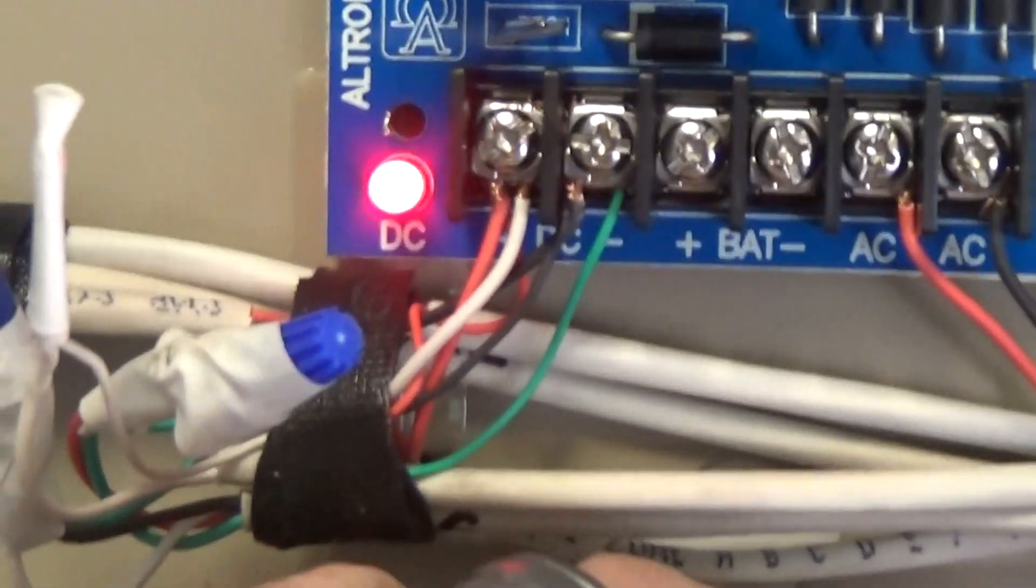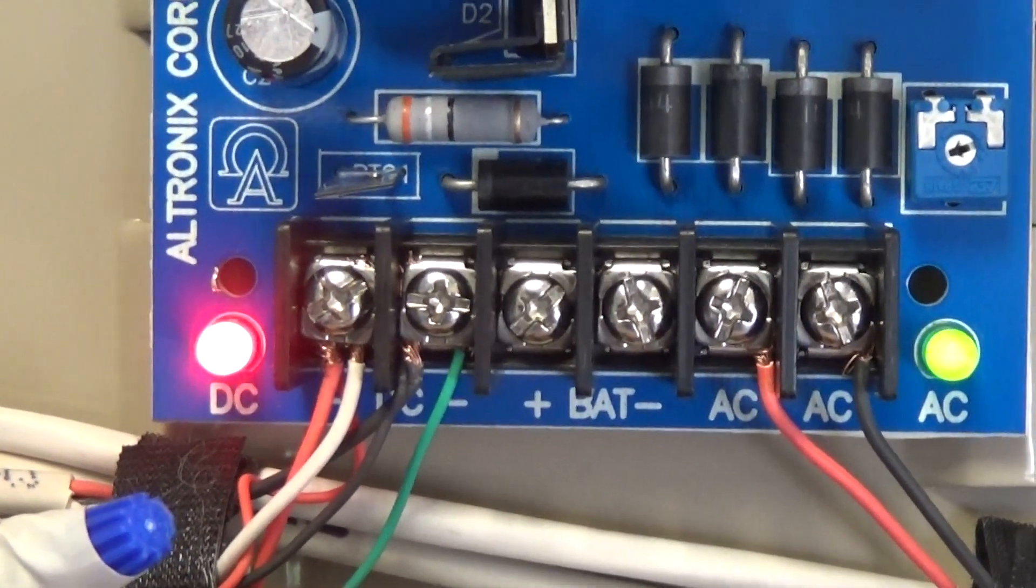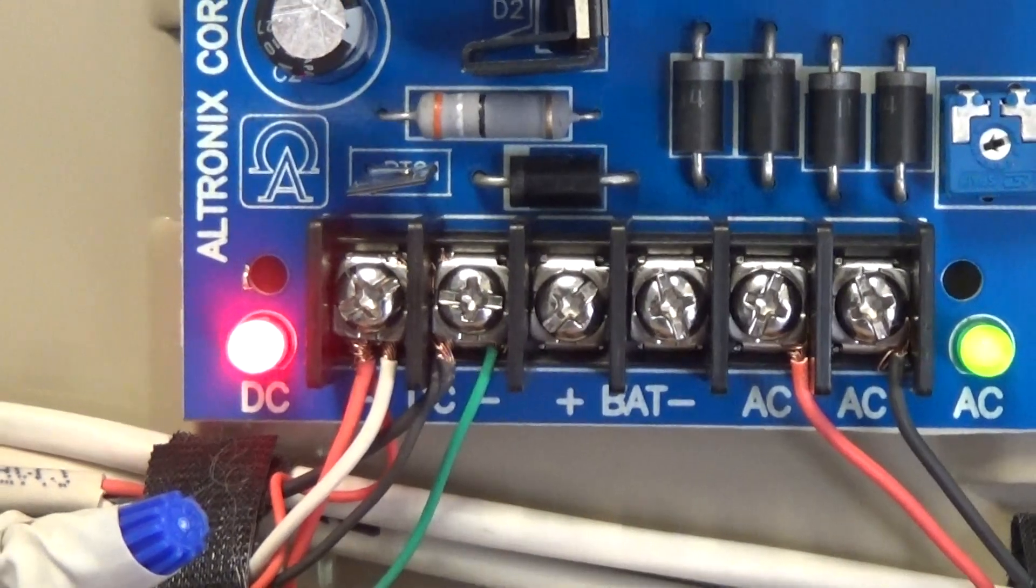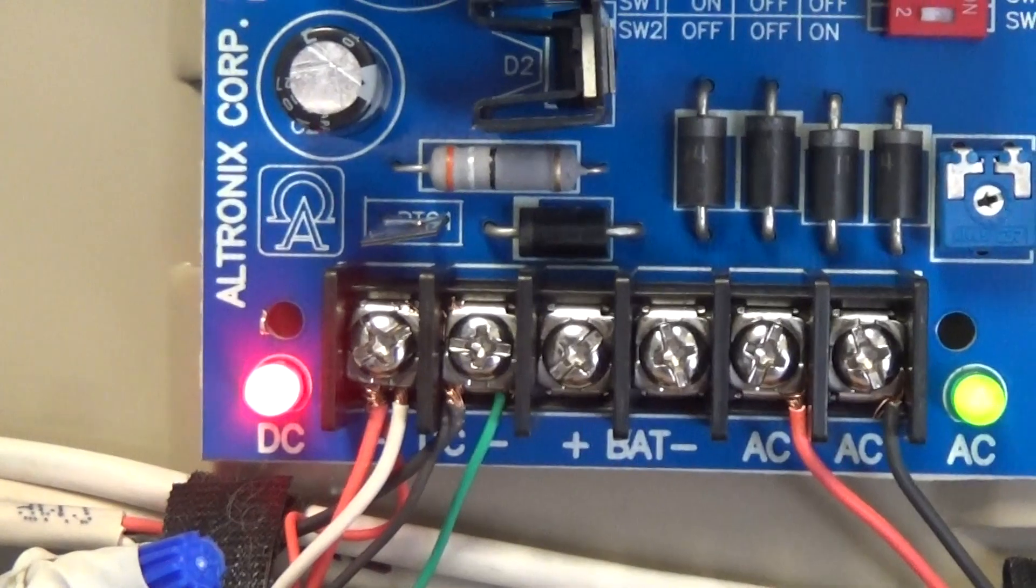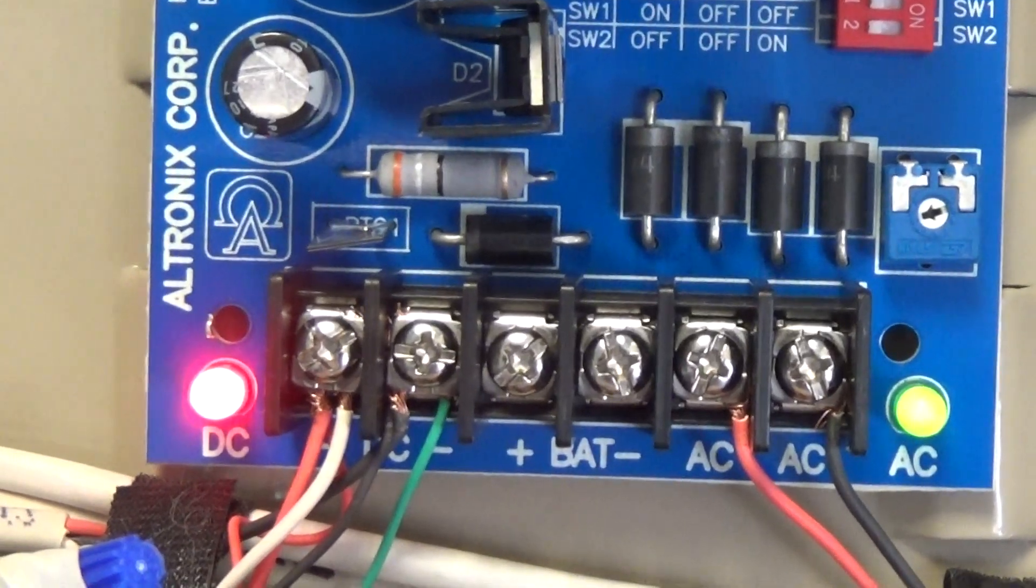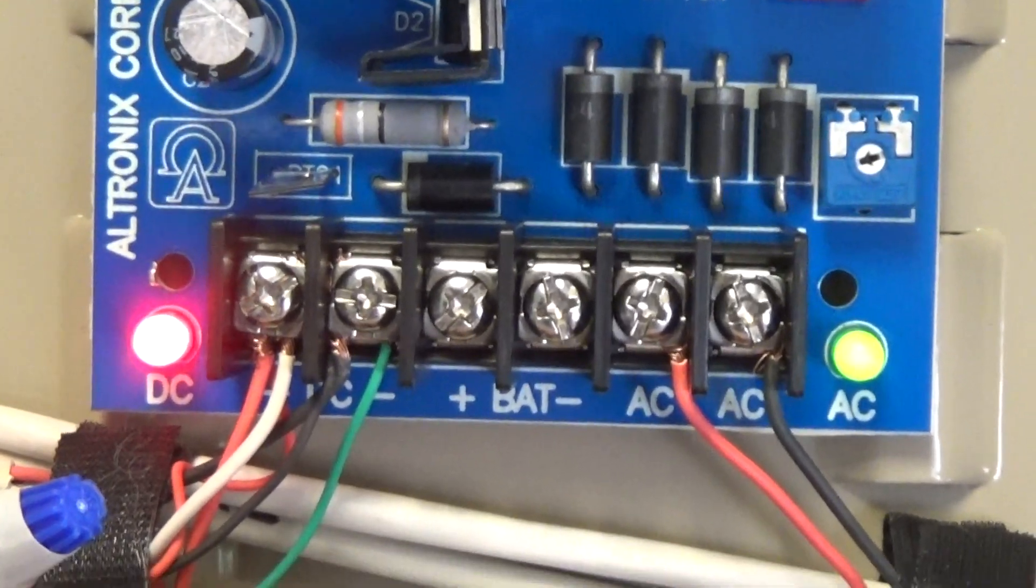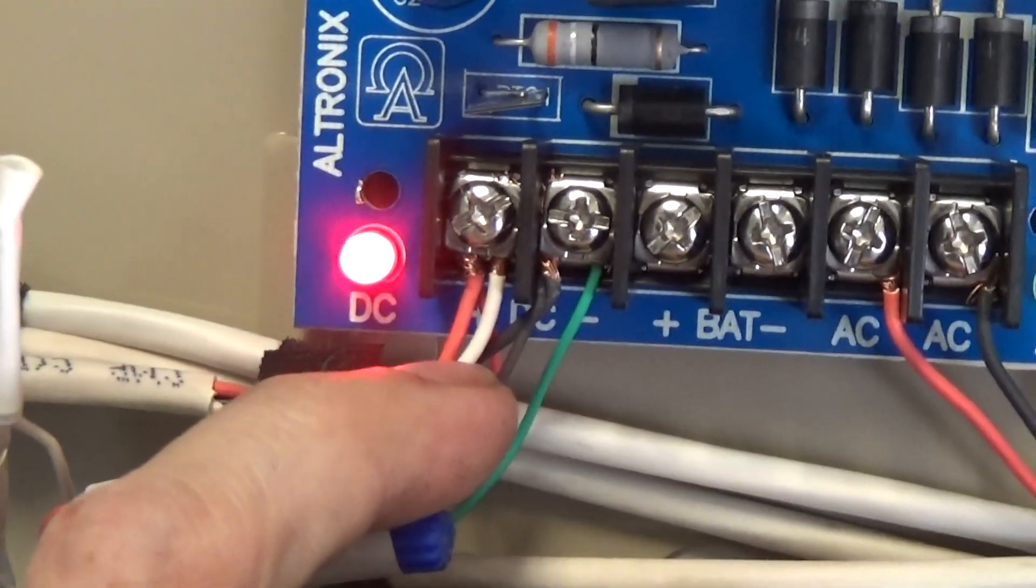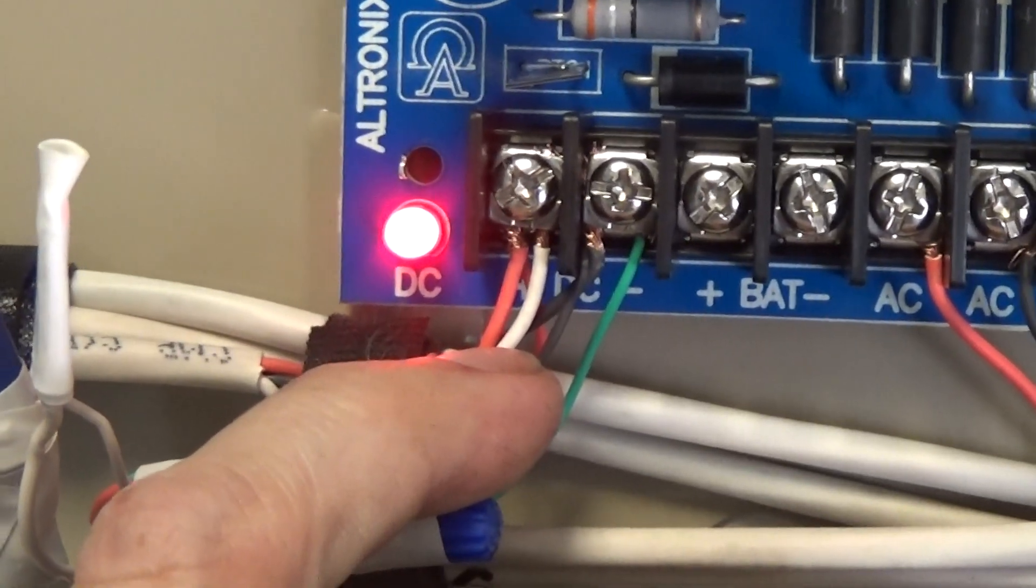So the way we have this wired up here is we've got the positive from the PIR and the request to exit push button hooked up to the positive right there, and then we have the negative from the PIR and the request to exit switch hooked up right there. And the very important part is this white wire right here is the normally closed of the timer that has to be hooked up to the power supply that's hooked up to the maglock.